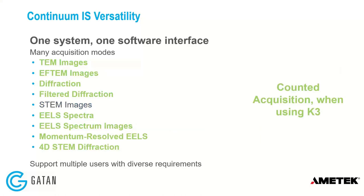A number of these capabilities, these different acquisition modes, can now be done in counted acquisition mode if you're using the K3. The only one that doesn't apply to is STEM, since we're using a STEM detector and not a camera. But for all of these other techniques, these can be counted using a counted acquisition mode if you have the K3 option for the Continuum. That's one I highly recommend — it really decreases the amount of noise in your data and gives you the very best results when you're operating the K3 in counted mode.